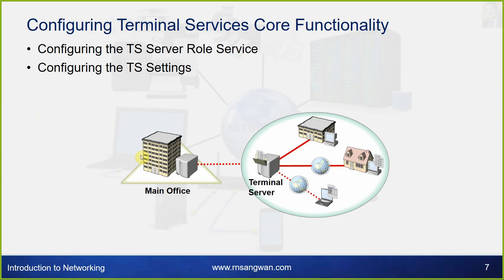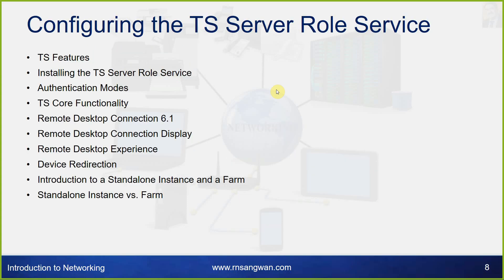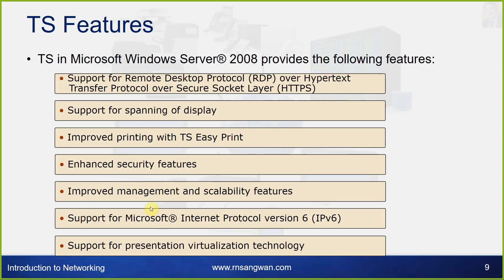To configure terminal services, first configure the TS server role service, then configure the TS server settings for the main office terminal service to allow access. You need to configure TS features, install the TS server role service, and set authentication modes. Core functionality includes remote desktop connections, display, remote desktop experience, device redirection, and standalone instance versus farm configurations.